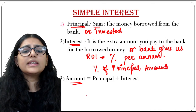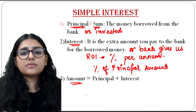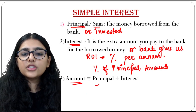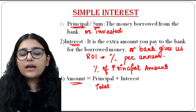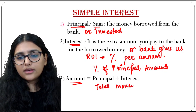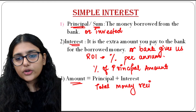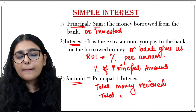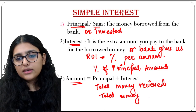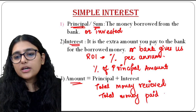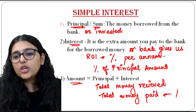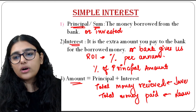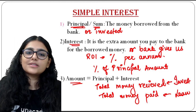The amount is the total money received after investing or the total money paid after borrowing. If you invest money, you receive the principal plus interest; if you take a loan, you repay the principal plus interest. The rate can be 5%, 10%, 6%, 7.5%, or any other percentage.